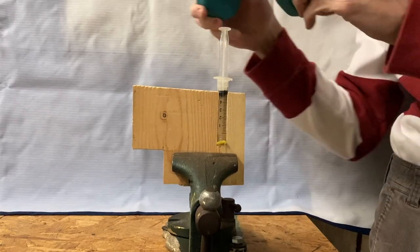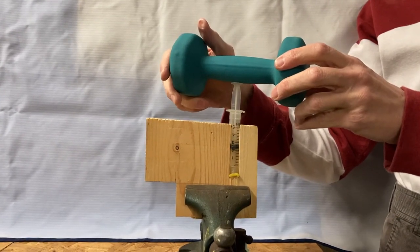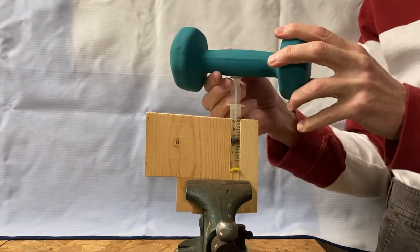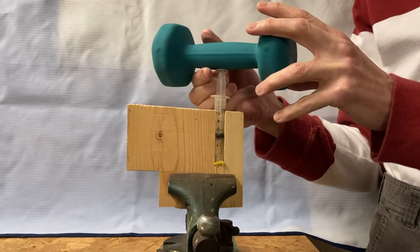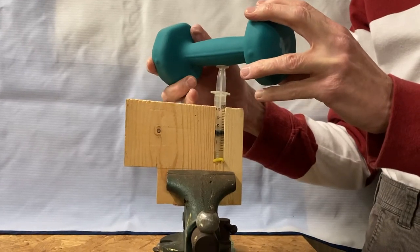The next step is to depress the plunger on the syringe using a known weight. We used a dumbbell, but you could use a bucket of water. Try to get the weight balanced on the end, but if you have to hold it with your hands, just make sure you're not adding or subtracting any pressure when you do this.